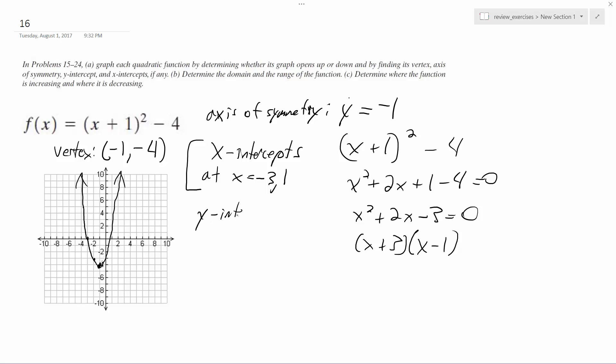All right, so y-intercept, that's when x is equal to zero, so that's one minus four. So that's at zero comma negative three. And actually, these x-intercepts are negative three comma zero and one comma zero.